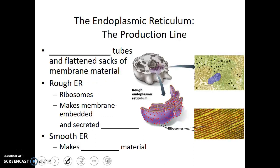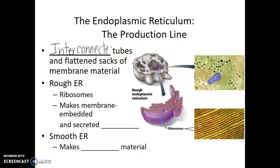One of the major components of the endomembrane system is the endoplasmic reticulum. The endoplasmic reticulum is the production line for our factory — this is where the stuff is made. By appearance, it looks like interconnected tubes and flattened sacs of membrane material, meaning a phospholipid bilayer. The nucleus had a double membrane, whereas the organelles of the endoplasmic reticulum have a single membrane boundary.